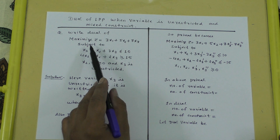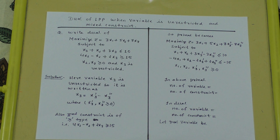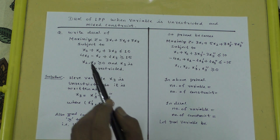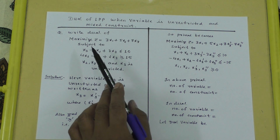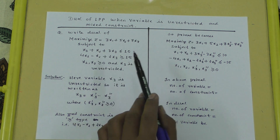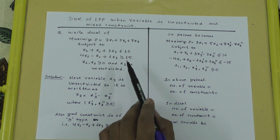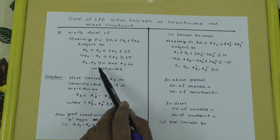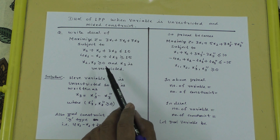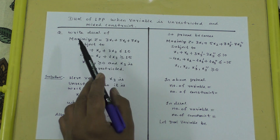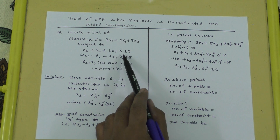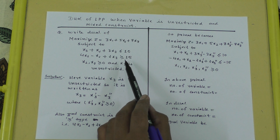Now we have to see the objective function: it is maximization type. From previous videos, we know that for a maximization objective, all constraints should be of the less-than type, and all variables should be non-negative. The first constraint is less-than type and the second is greater-than type, so we have to convert it to less-than type.